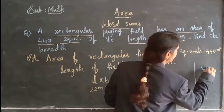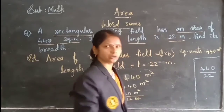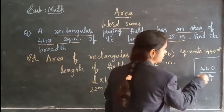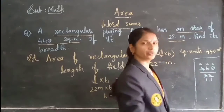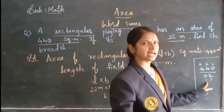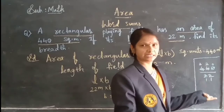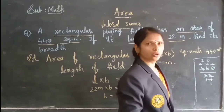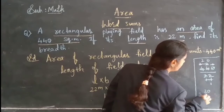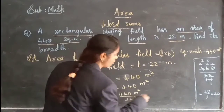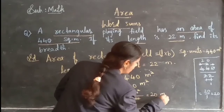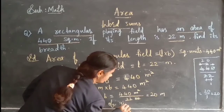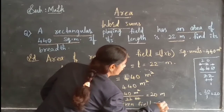Let's do the simplification. We can cancel in the 2 times table: 220 and 11 get cancelled in the 11 times table. After cancelling, the leftover terms give us 20 by 1, which is 20. Therefore, the breadth of the given field is 20 meters.